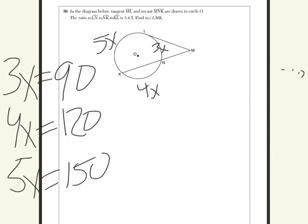Now, you know all the arcs. You know that ln equals 90, kn equals 120, and lk equals 150, and it asks you for angle lmk.